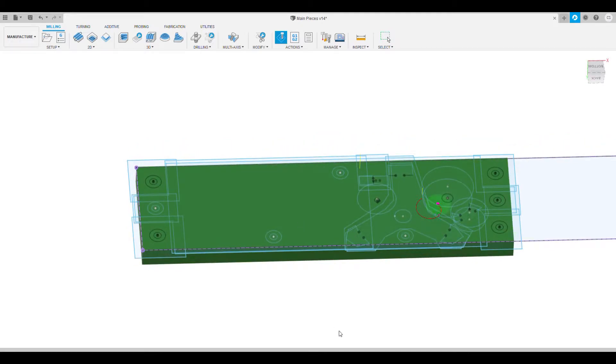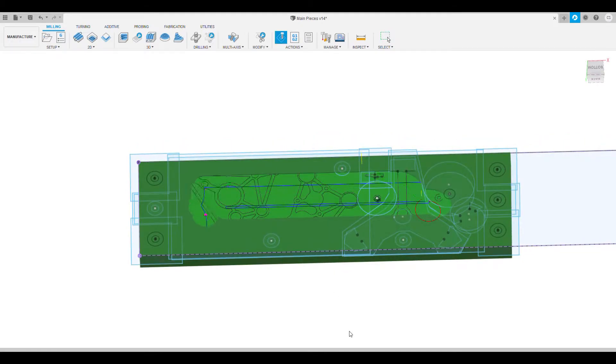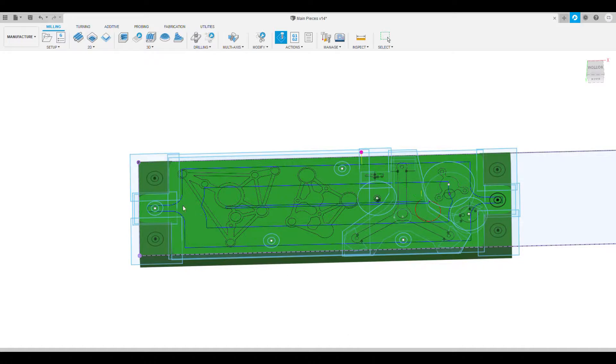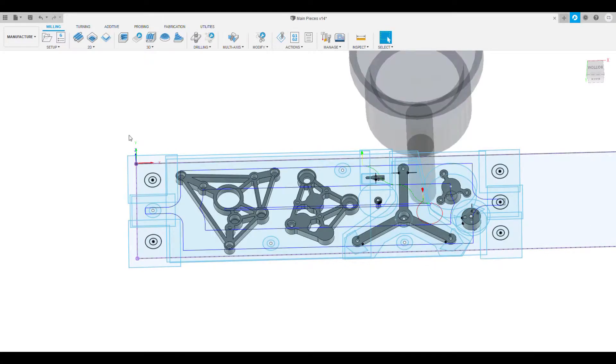Then once we have that I'm going ahead and I'm milling the features which need to be on the backside. Here you can see a simulation. Here's the first step. Notice everything is to depth except for those four corners.